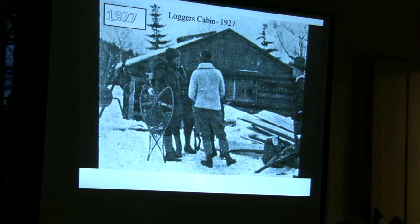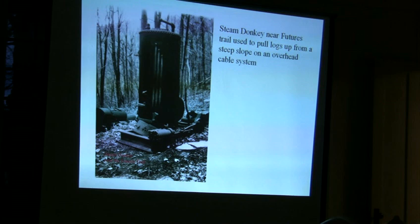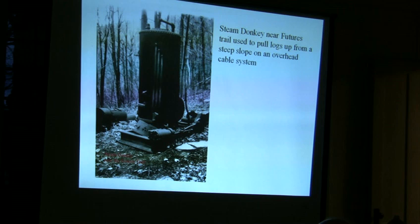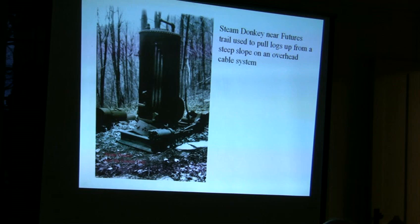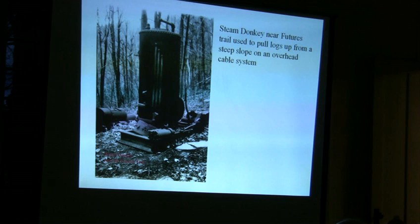This steam donkey is still there, near the Futures Trail. It's kind of hard to see in the picture — you can see the piston, which went over to a crankshaft that drove, through a pair of gears, a drum for the cable. Below the steam donkey, down the slope, it's very steep. They had an overhead cable of some sort and hauled the logs up to where they could get at them and take them down the mountain by sleds or whatever they were using in those days.